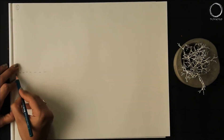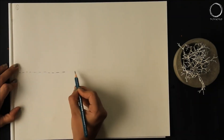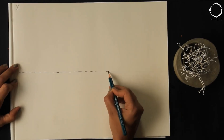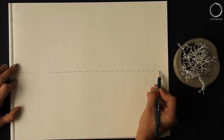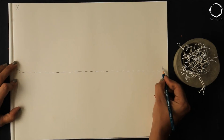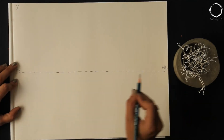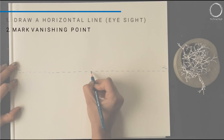Let's move on to the second step. For that, draw a horizontal line at the center of the page, imagining you are at the center, and mark a vanishing point.